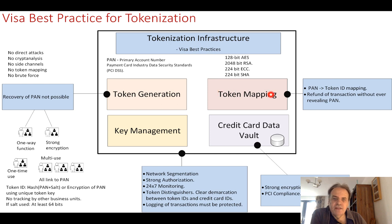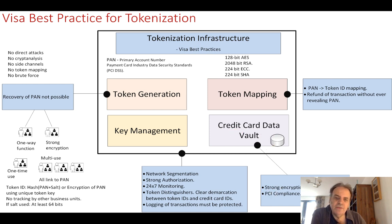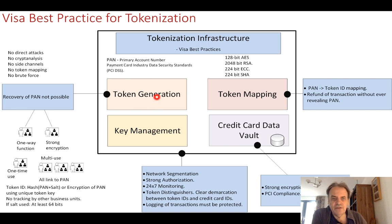Then we have token mapping. We map the PAN to the ID, and a core part of this is to make sure it's possible to issue a refund to the customer without actually revealing the original PAN numbers. When dealing with credit card details, strong encryption is used to make sure all the credit card details are protected and we have PCI compliance for the storage and protection of them. Along with this we have key management, which is important to keep all required keys for the right amount of time and then access them when they are actually required.